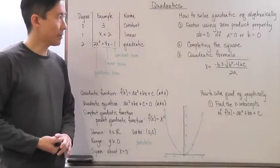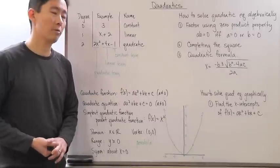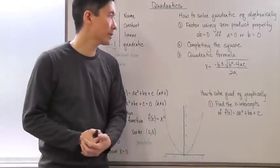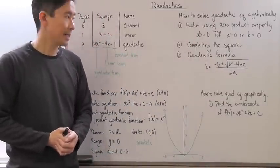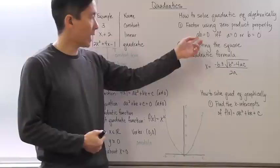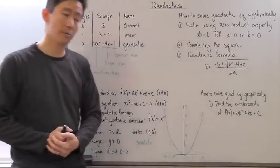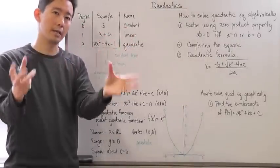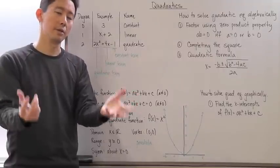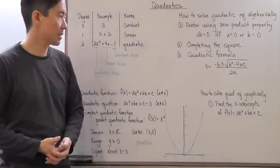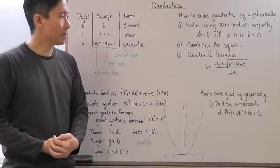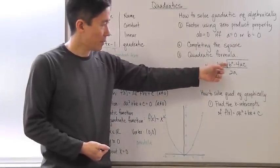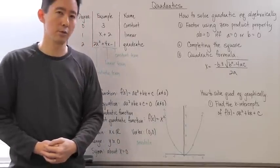Now, what we really want to focus on is how to solve quadratic equations algebraically. Generally speaking, there are three ways to do that. You can either factor it using the zero product property — which states that ab equals 0 if and only if a equals 0 or b equals 0 — then set each factor equal to 0 and solve each one separately. You can also complete the square, and you can also use the quadratic formula, which is x equals negative b plus or minus the square root of b squared minus 4ac, divided by 2a.